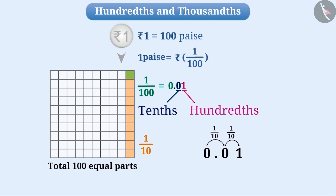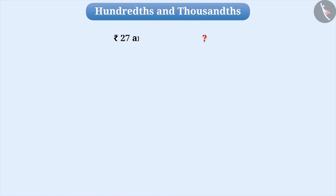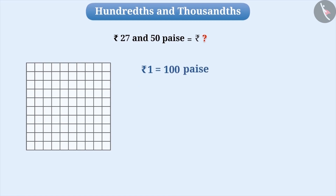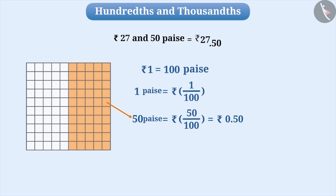Let us solve the incomplete question with this understanding. The question was: how do we express 27 rupees 50 paise in rupees? Since 1 rupee is equal to 100 paise, 1 paise is equal to 1 by 100 rupees. Therefore, 50 paise is equal to 0.50 rupees. Thus, rupees 27 and 0.50 rupee together become rupees 27.50.